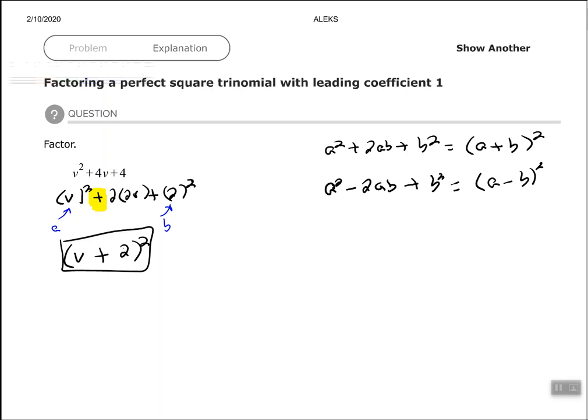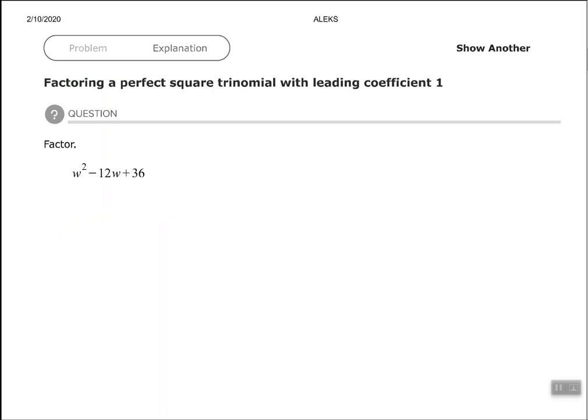All right, let's look at another one. So this one we have w squared minus 12w plus 36. So again, I don't have a GCF all the way across. However, I do notice that I have perfect squares on the ends. 36, 6 squared, 36.